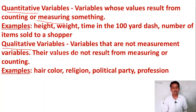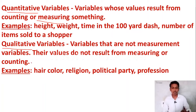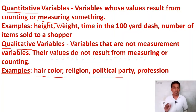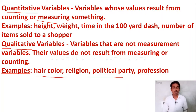Qualitative variables are variables that are not measurement variables — variables that cannot be calculated in numbers. For example: hair color, religion, marital status, political party, profession. These variables cannot be expressed in numbers, so they are known as qualitative variables. Please remember this information, as one question will appear on variables. In the previous NET examination also, one question was there on qualitative variables.